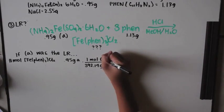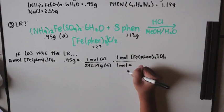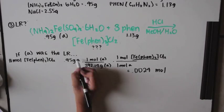If you're given 0.95 grams of A, you use molar mass and the mole to mole ratio, which is one to one, you would end up with 0.0024 moles.